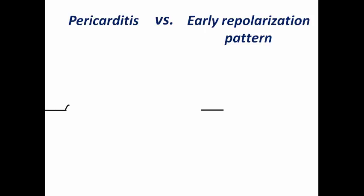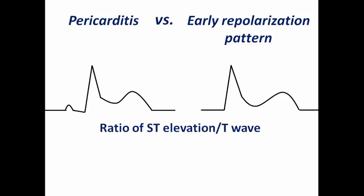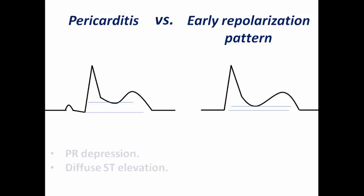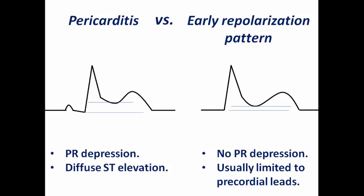For pericarditis versus early repolarization pattern, we can use the ratio of ST elevation to T wave amplitude. In pericarditis, this ratio is typically greater than 0.25, whereas in early repolarization it is less than 0.25 — meaning ST elevation is relatively higher in pericarditis. Additionally, PR depression and diffuse ST elevation are common in pericarditis, while early repolarization shows no PR depression and is usually limited to the precordial leads.